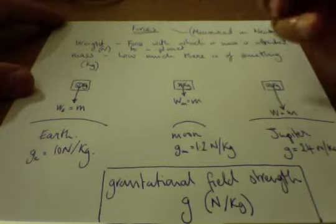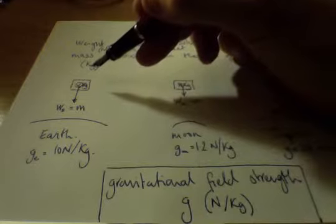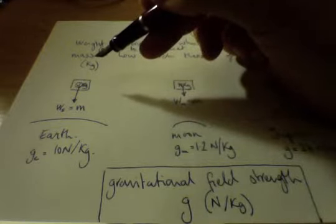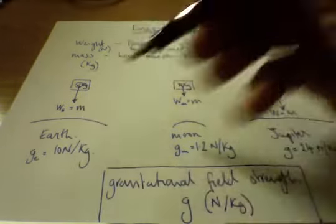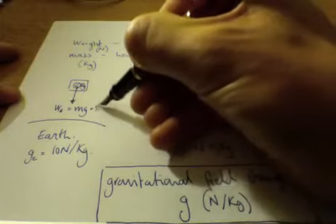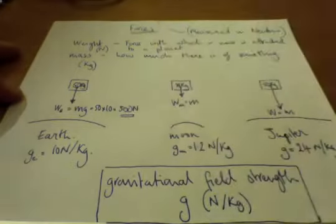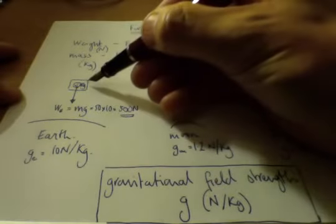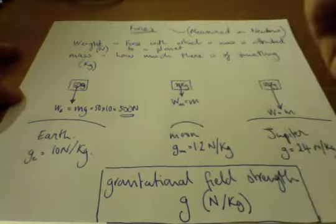Now, with 50 kilograms running it on Earth, saying that every kilogram must experience 10 newtons, our weight on Earth must be a multiple of the two. So 50 times 10 gives us 500 newtons. Still the same mass of 50 kilograms, but 500 newtons is the force we experience, or the weight.